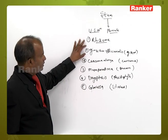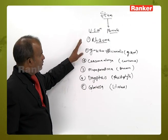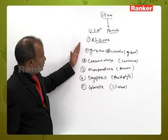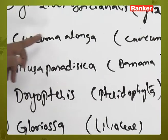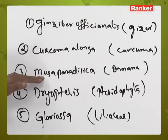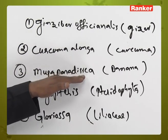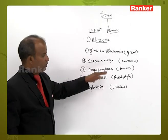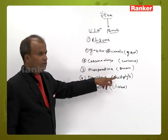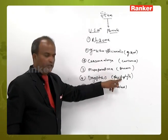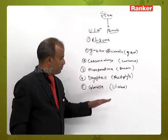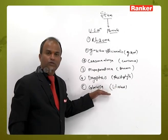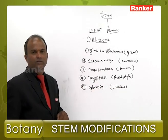Zingiber officinale is an angiosperm. Curcuma longa is also an angiosperm. Musa paradisiaca is an angiosperm belonging to monocots. Dryopteris belongs to Pteridophyta. Gloriosa superba is a member of Liliaceae, also belonging to monocots. The first three examples belong to angiosperms, whereas Dryopteris belongs to Pteridophyta.